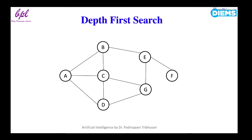Now let us try to solve this problem by DFS. Consider this graph. In this graph, A is the initial state.